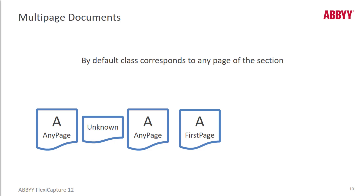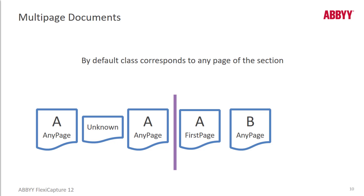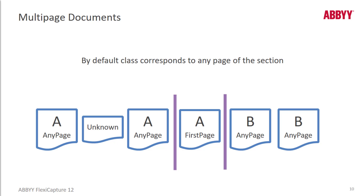A first page designation marks a border and a new document is started. The next document is classified as class B, which is a different class from the previous page, so again we have a separation. To summarize: the classifier starts a new document when either a page is classified with a different class, or with a first page position.